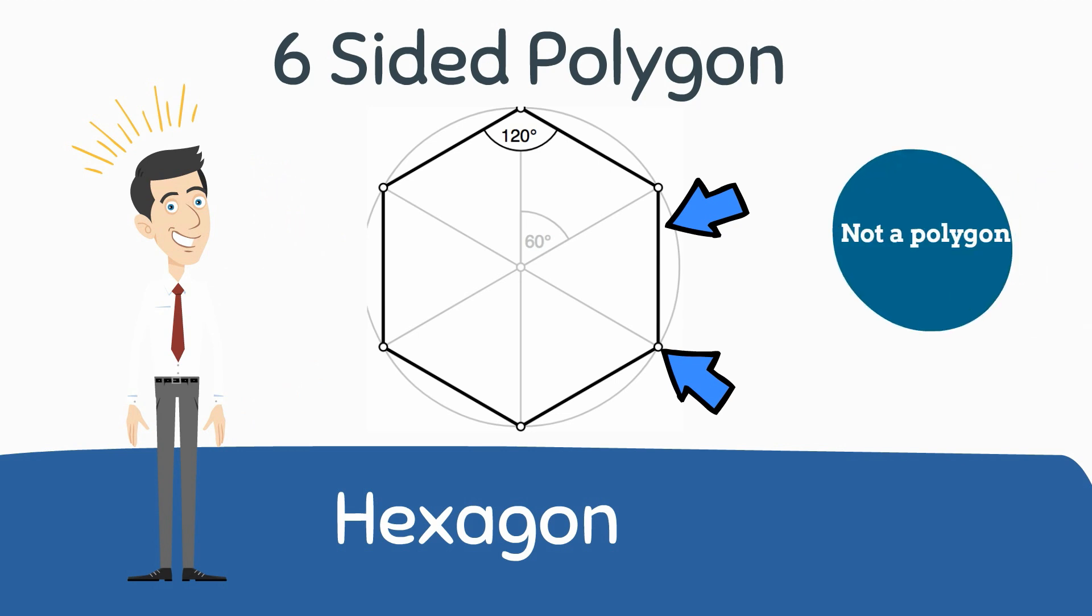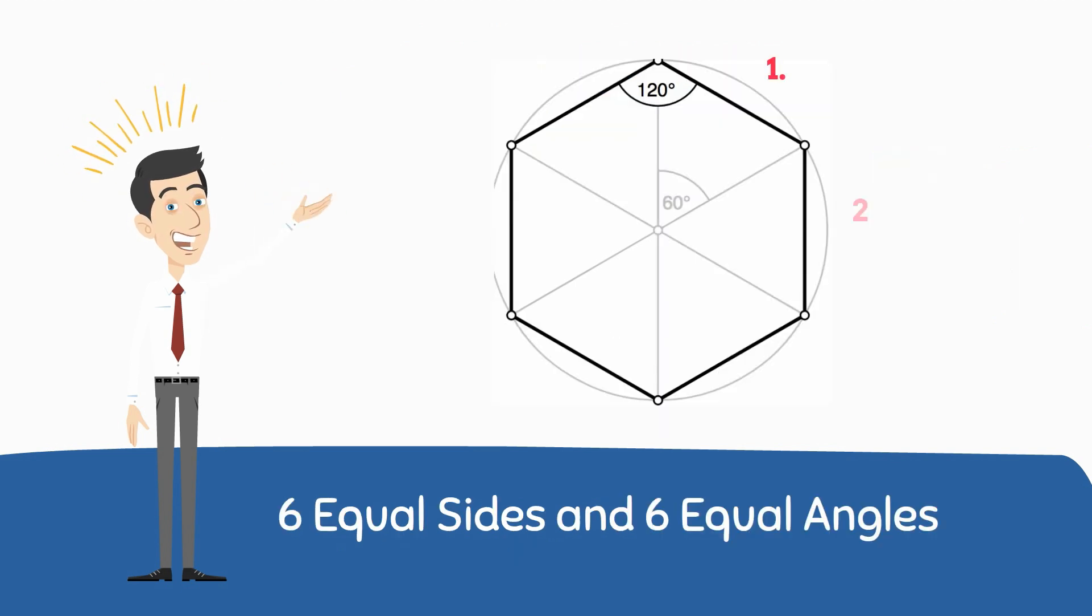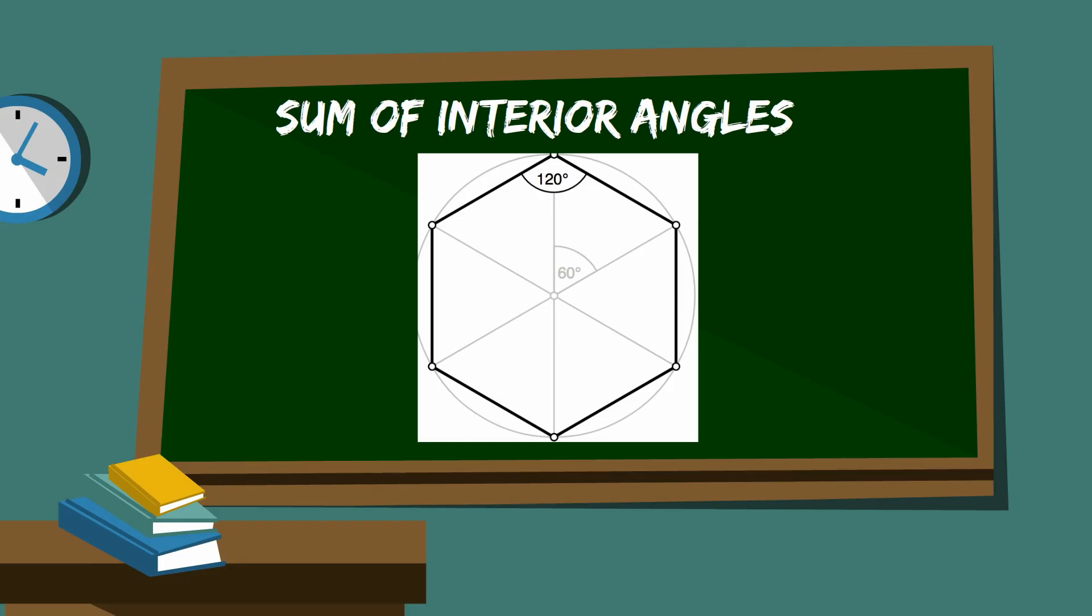Circles and shapes that include curves are not polygons. A regular hexagon has six equal sides and six equal angles.